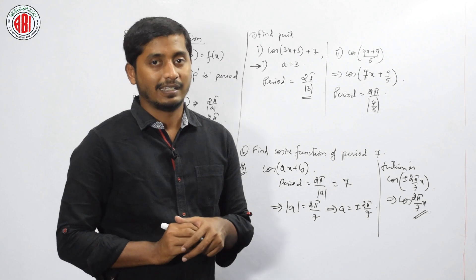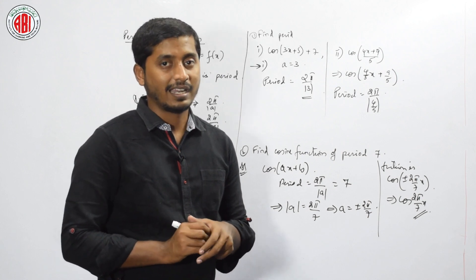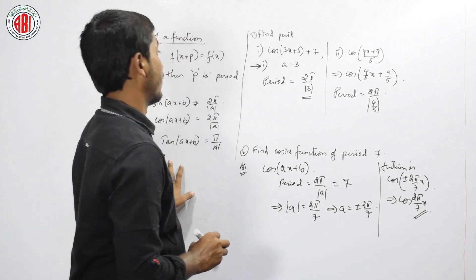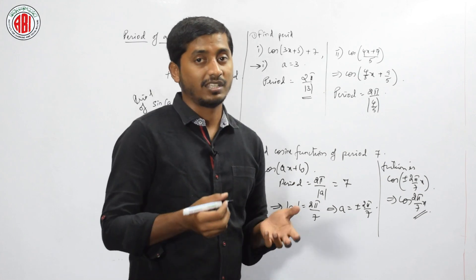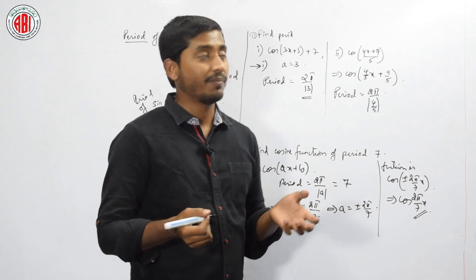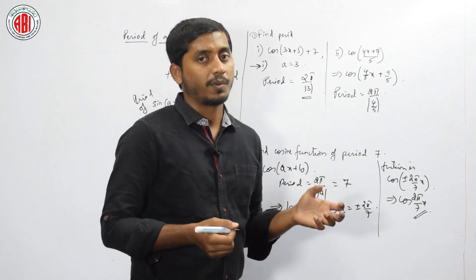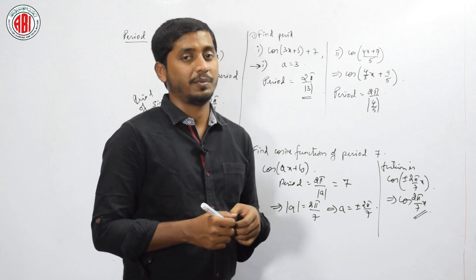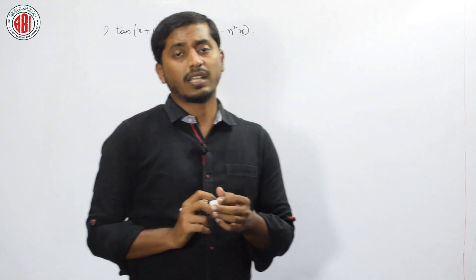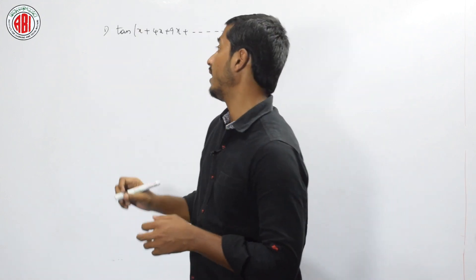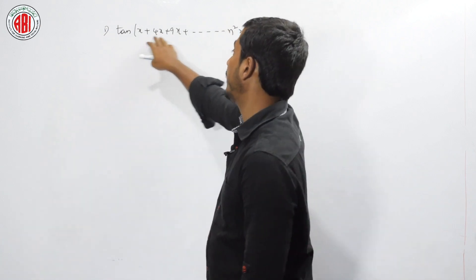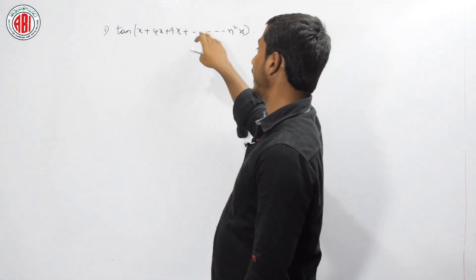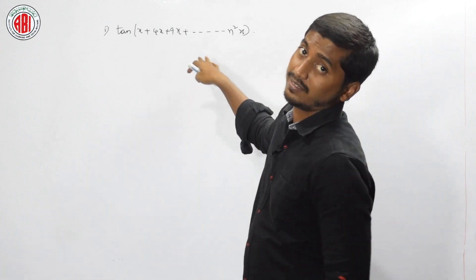Did you understand? We have seen the period definition, explanation, and solved a few problems. Let us have one more problem on periodic functions. The question asks us to find the period of tan(x + 4x + 9x + ... up to n²x).